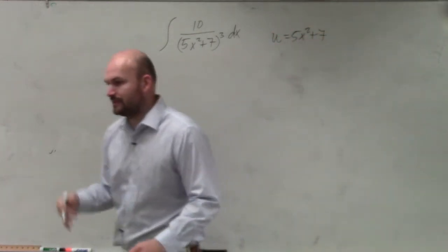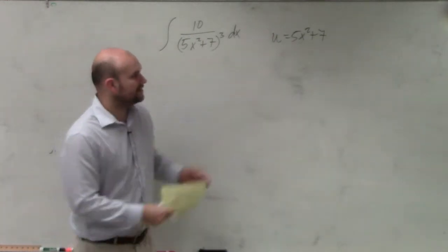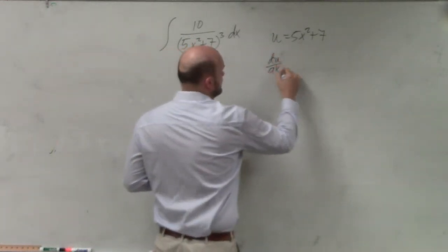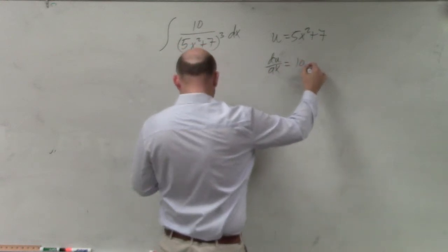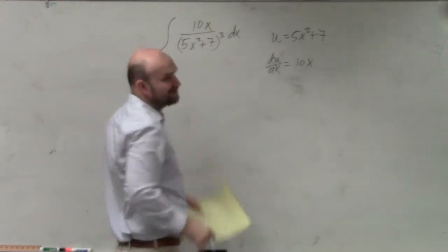So let's just write out u is 5x squared plus 7. Now, that's in the denominator. We understand that. And if we were going to find du dx, the derivative of that is going to be 10x, which, oops, I'm sorry. I did write down the problem wrong.